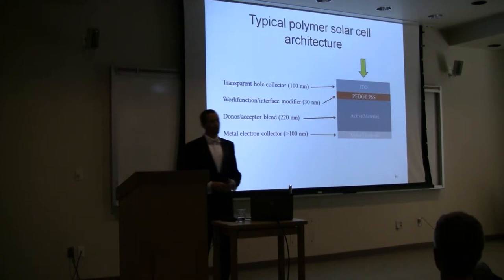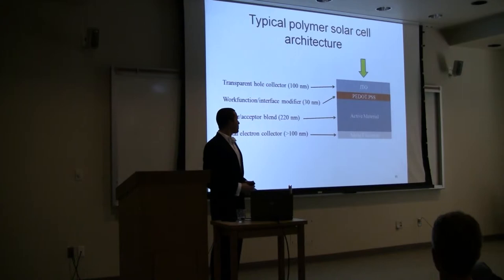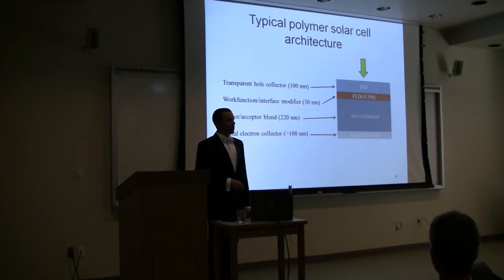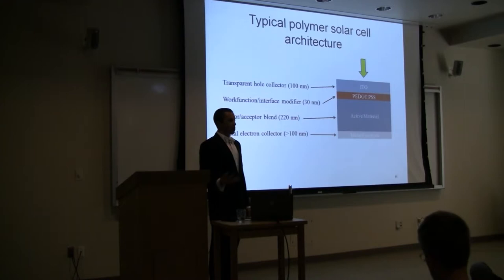Typical polymer solar cell architecture is shown here. These are all very thin layers. We have a hole collector on top. It's transparent. It's the same stuff that you have on your LCD screen, called indium tin oxide. It's modified with a work function modifier, PEDOT:PSS, a doped polymer. The active material is that bulk heterojunction I was talking about before, the polymer and the acceptor, which in most cases is a fullerene molecule. And then there's a metal electrode which collects electrons.